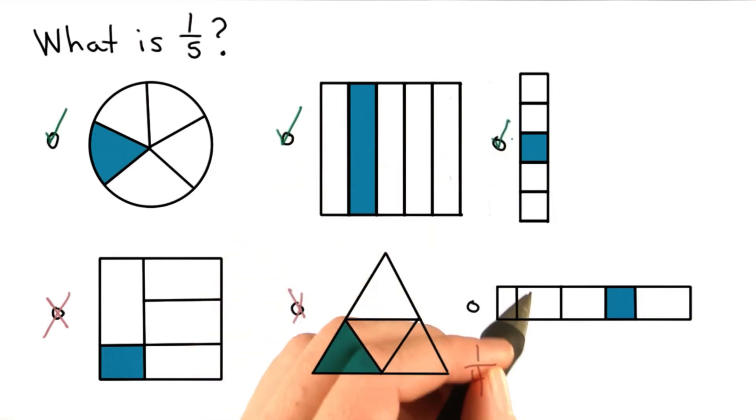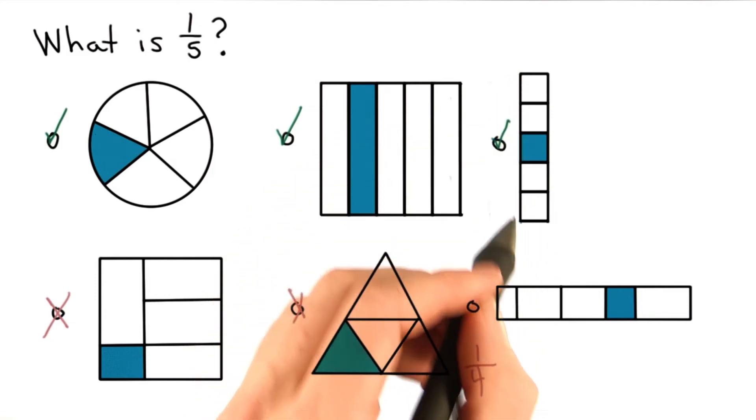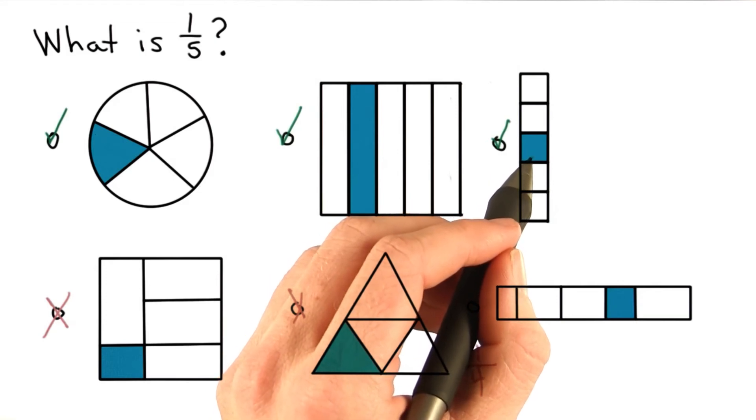This one is also correct. I have five pieces of my entire rectangle, and I have one of them shaded, so one-fifth.